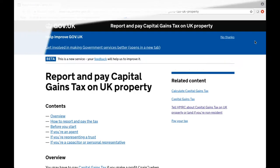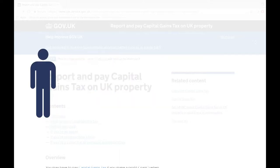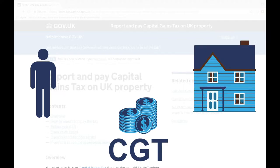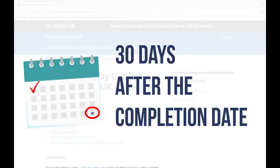A quick recap of the changes to the rules. Since 6 April 2020, individuals who are due to pay capital gains tax on UK residential property disposals have 30 days after the completion date to report and pay the tax.